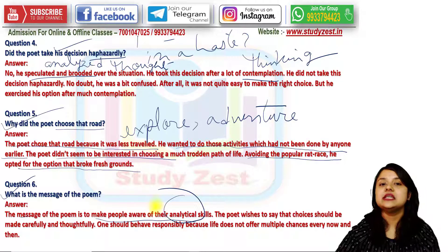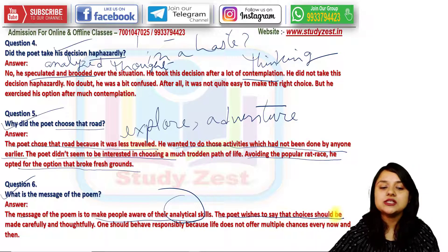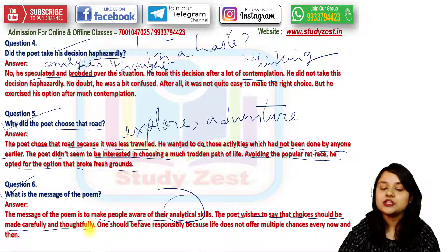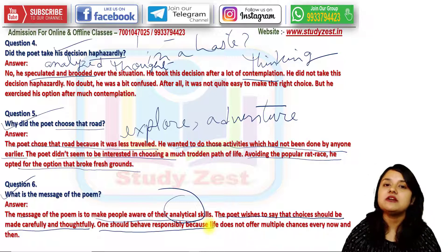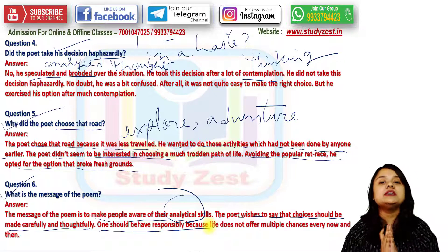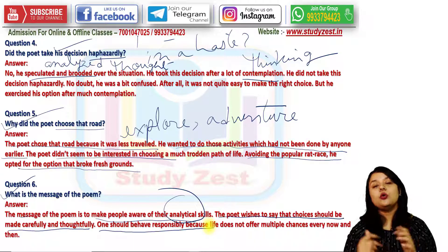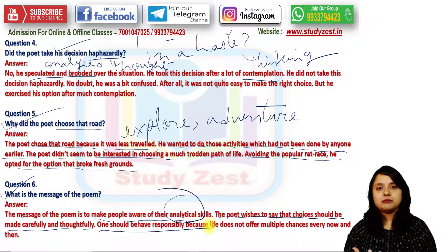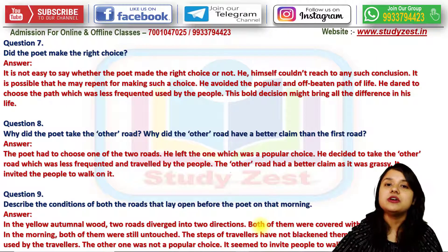What is the message of the poem? The message is to make people aware of their analytical skills and choice-making skills. The poet wishes to say that choices should be made carefully and thoughtfully. One should behave responsibly because life does not offer multiple chances. If you think that in the future you can go back and make everything better, that does not happen — life doesn't give you multiple chances. That's why our analytical power is very important.